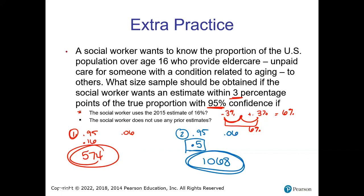That is confidence intervals for proportions. Everything we're doing is in StatCrunch under Stats, Proportion Stats, One Sample — whether using Summary for the confidence interval or Width/Sample Size for determining sample size. The goal is to take sample information and expand it to the population: what could we expect if we had access to the whole population? Next section, we will go into means.